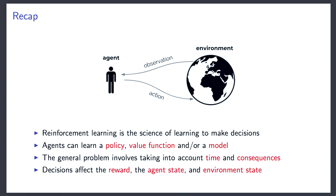Just to recap what we talked about last lecture: this is the generic reinforcement learning setup. There is an agent who observes the environment, which could be the world at large or some small problem you're trying to solve. The environment accepts actions from the agent, and the environment responds by sending out a new observation — you get this interaction loop.